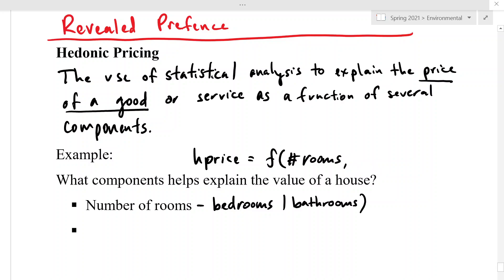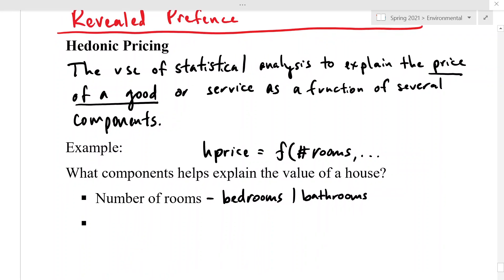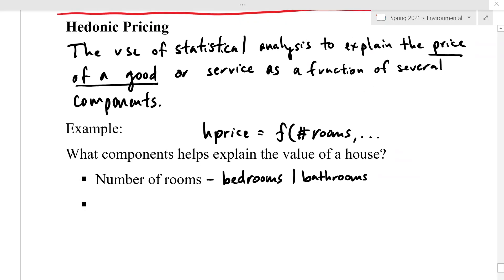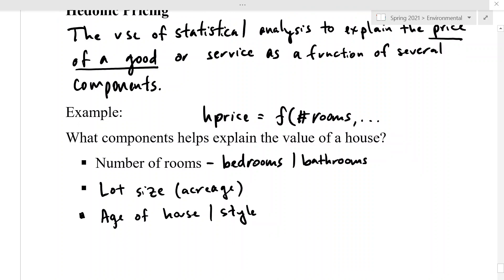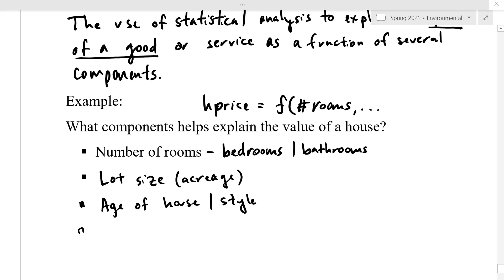But I would encourage you to pause the video and think about the other sorts of things that are going to help explain the value of a house. So what influences a house price? And when you're ready, I'll talk about a couple others here. So another one could be lot size or acreage if it's a big lot. So how big is the piece of land that the house is on? You could do the age of the house, or even the style of the house. All of these are going to affect the house price.